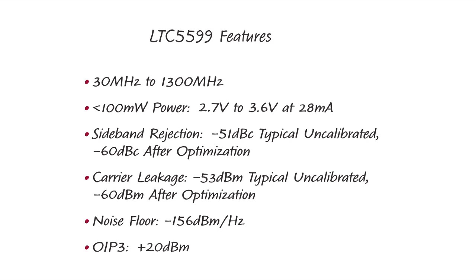The modulator typically exhibits sideband rejection of minus 51 dBc and carrier leakage of minus 53 dBm. These performance metrics are hard to beat and are sufficient for many applications, and they can be improved further should that be needed using the on-chip calibration facility. The 5599 also has excellent noise floor of minus 156 dBm per hertz, with an output IP3 of plus 20 dBm.